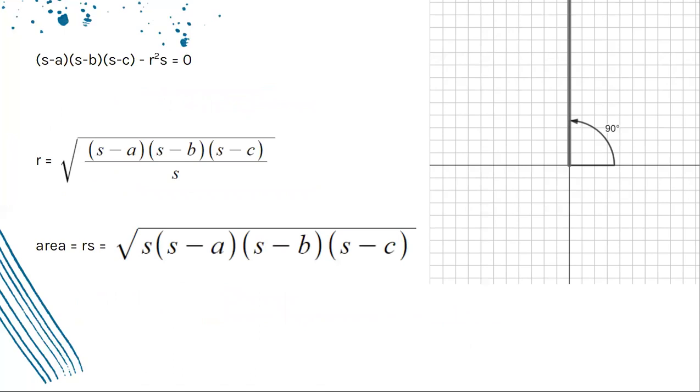Solving for R, we get R is equal to the square root of (S - A)(S - B)(S - C)/S. Remember that area formula we proved earlier, that R × S is the area? Well, we can now use that to get that the area is equal to the square root of S(S - A)(S - B)(S - C).